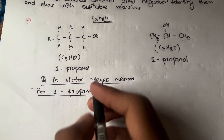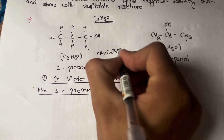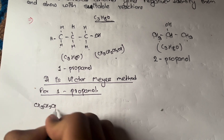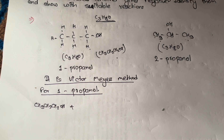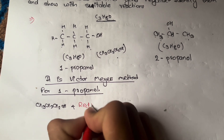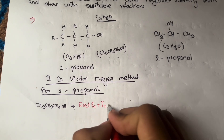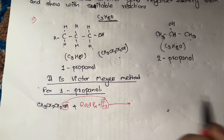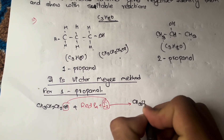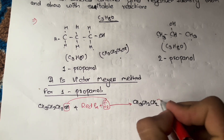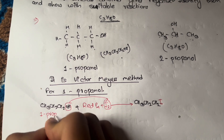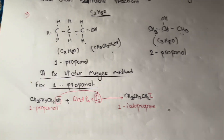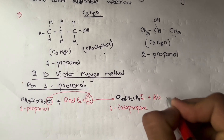For 1-propanol (CH3CH2CH2OH), we apply the Victor Meyer method. First, we react with Red Phosphorus (P4) plus I2. This gives us one iodo group — we get 1-iodopropane. This is the first step in the Victor Meyer sequence.